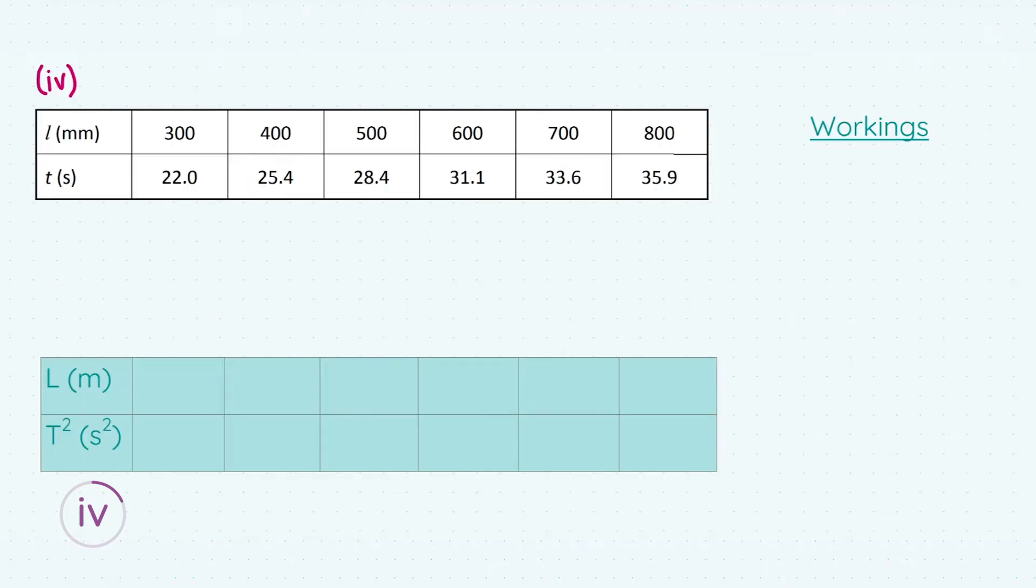Now moving our attention to the data table. My biggest tip would be to copy down a fresh, clear table like the one I have below in your exam booklet with a little workings margin as shown here. I use this margin to show explicitly how to convert these measurements into SI units or units needed for the graph. The data recorded for the length of the simple pendulum is in millimeters. We need it in meters because that is an SI unit.